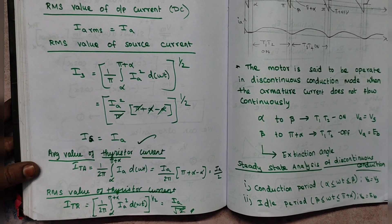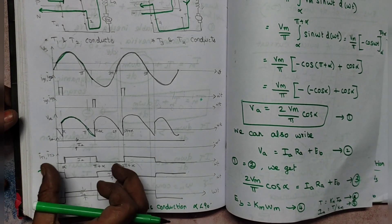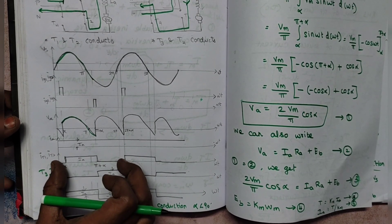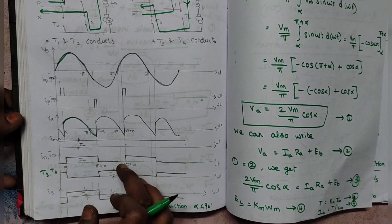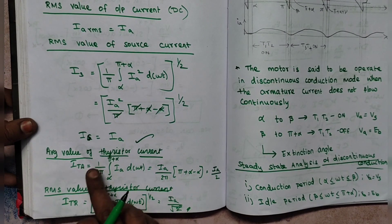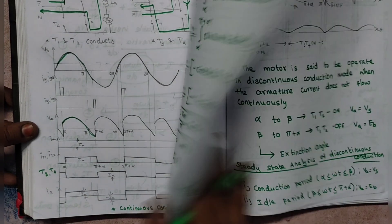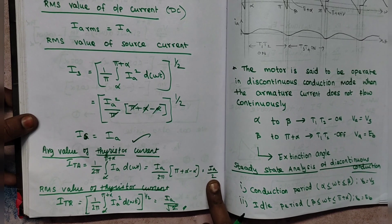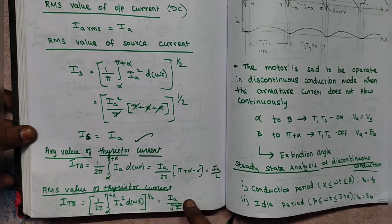Similarly, the average value of thyristor current is found using (1/2π), integrating Ia·d(ωt) from α to π + α (since the thyristor waveform is periodic over 2π). Substituting limits gives Ia/2 for the average thyristor current. For the RMS value of thyristor current, taking the square and square root of the same integral gives Ia/√2.